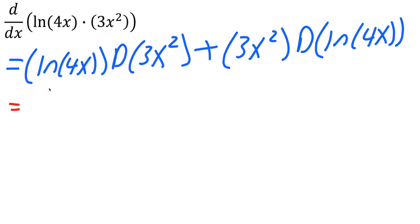This piece will stay the same: ln(4x) times the derivative of 3x² gives us 6x. Because you bring the 2 down, so you get 3 times 2, which is 6, and x raised to 2 minus 1, which is 1.